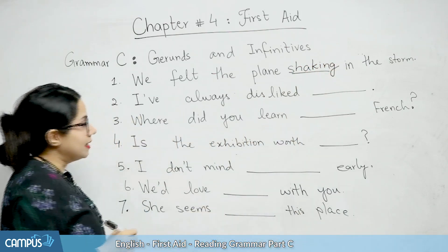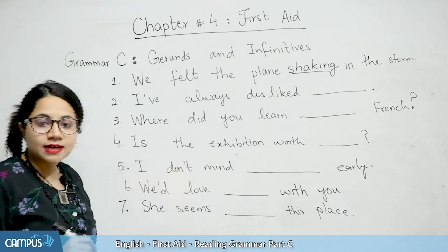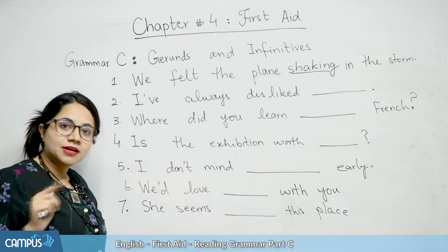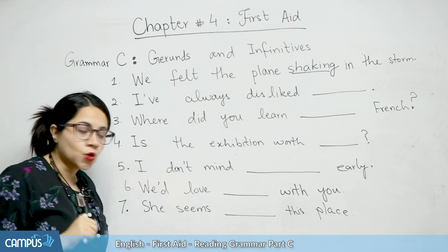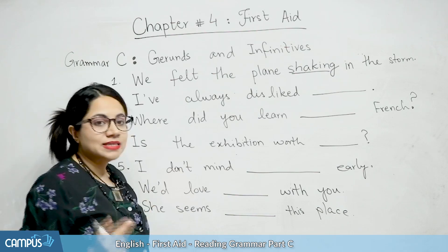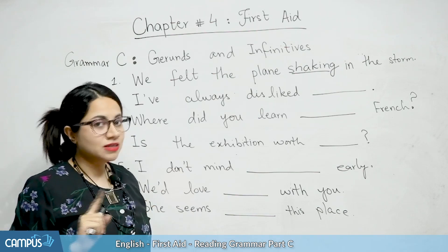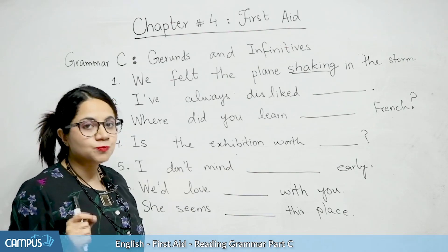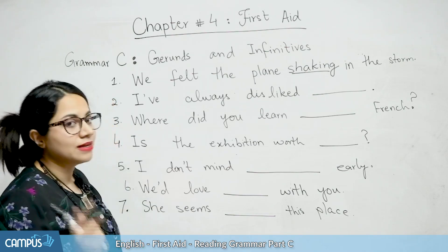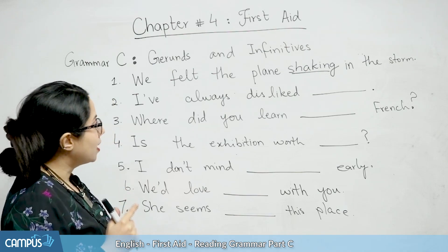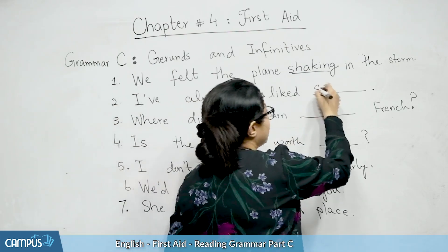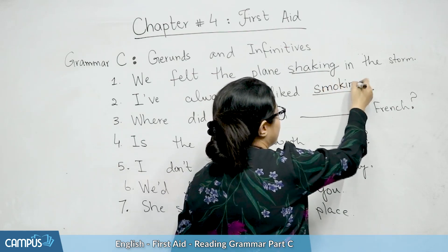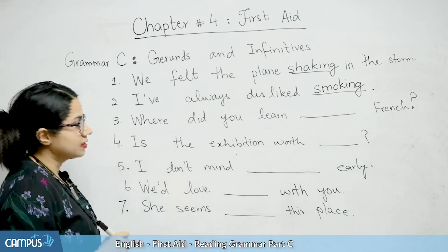The next sentence is: 'I've always disliked blank,' and in brackets they have written 'smoke.' If we say 'I've always disliked to smoke,' it doesn't make sense — that would be a grammatical error. So the correct answer is: 'I've always disliked smoking.' The gerund comes here.